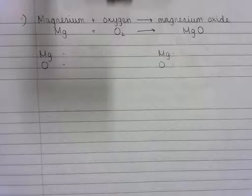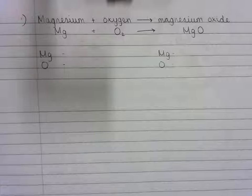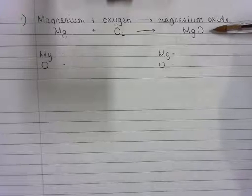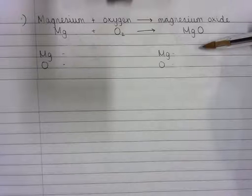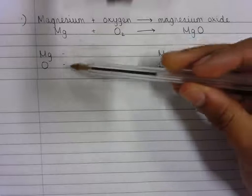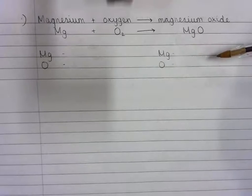This is the 'Balance in Chemical Equations' video number one. I have completed the first three steps in pen: I have written the word equation, the chemical equation, and written out the chemical symbols for the atoms that react in the reaction on the reactant and product side of the equation.